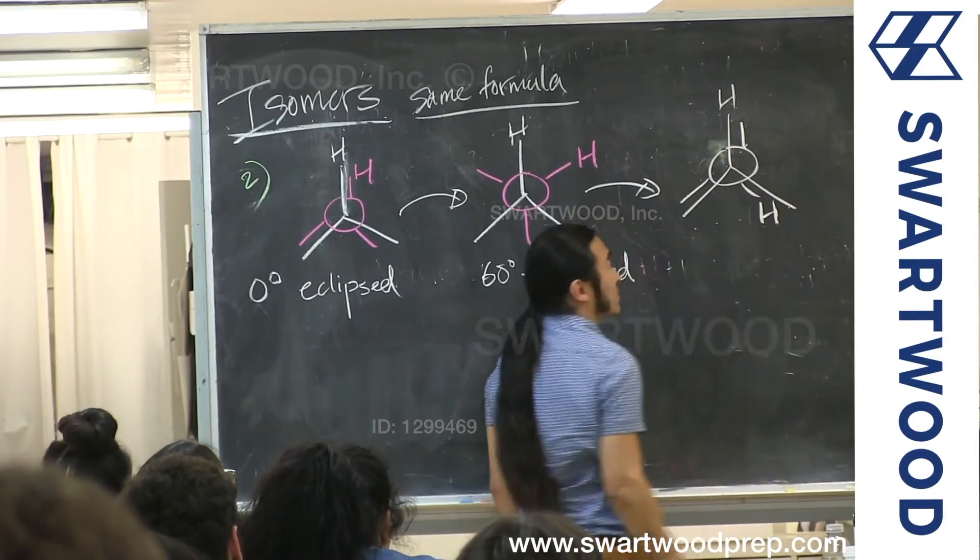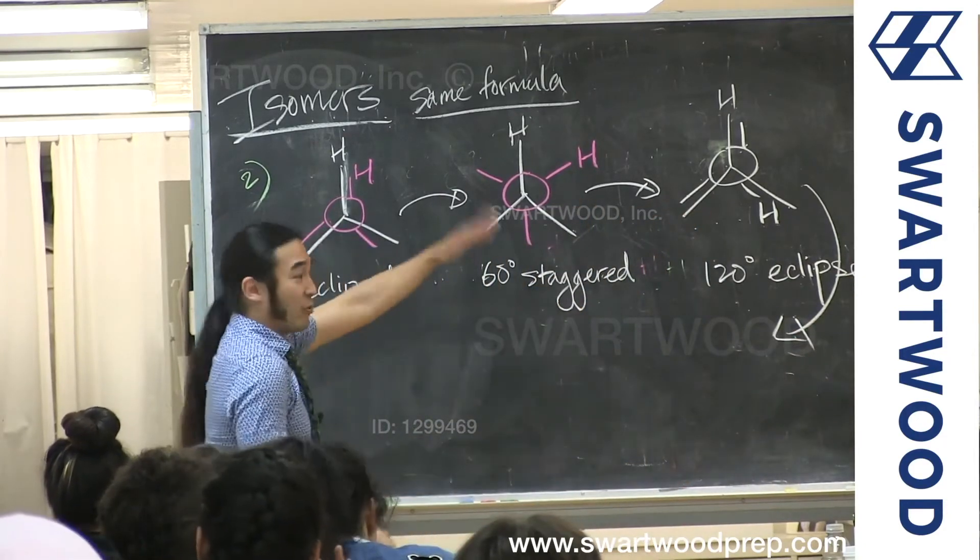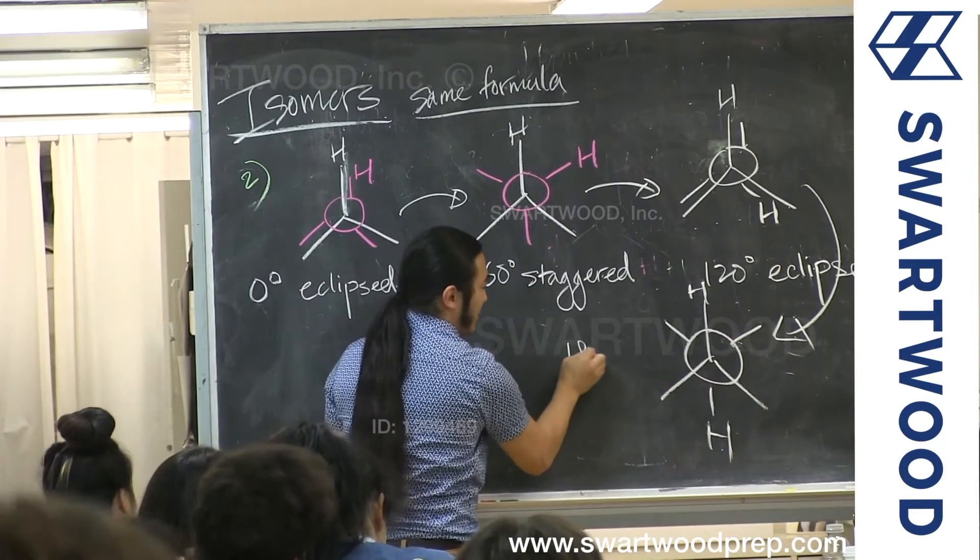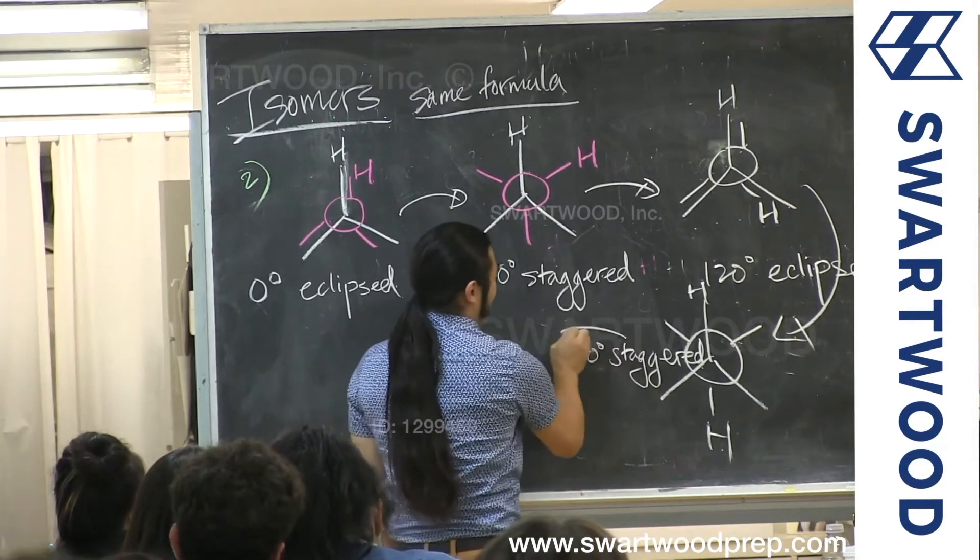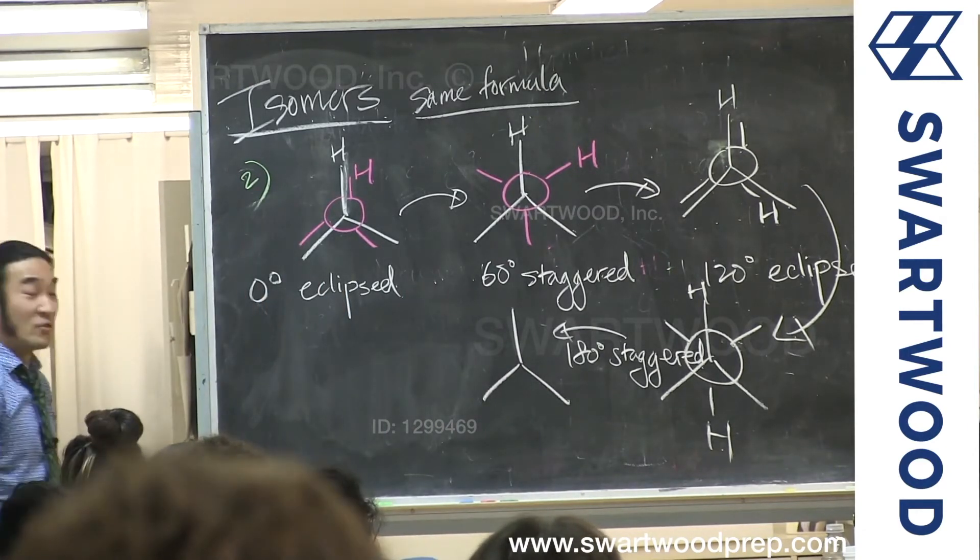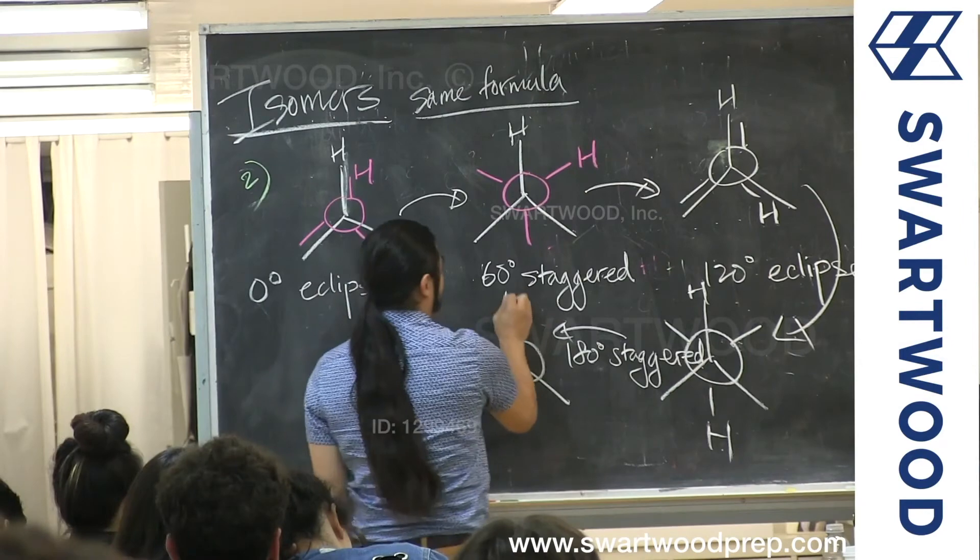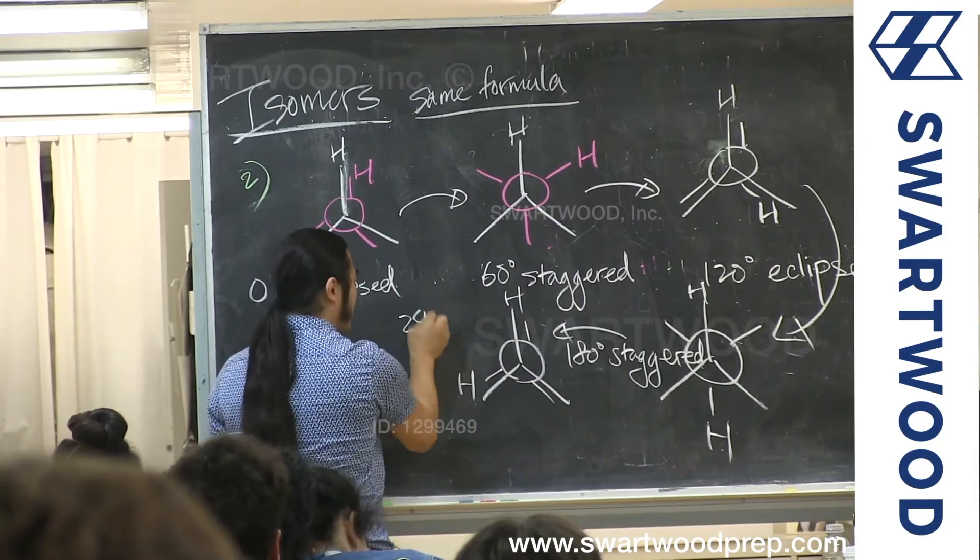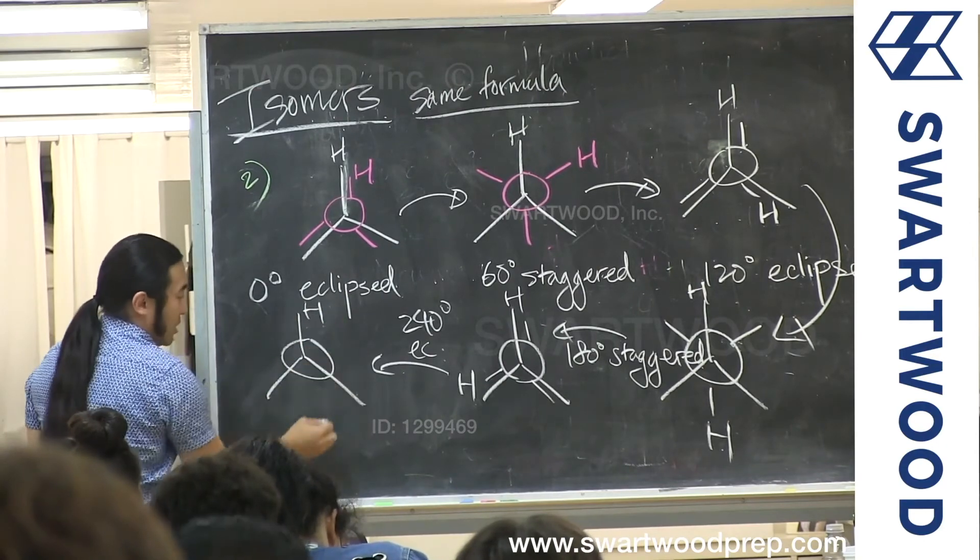You have the H up here. What would this be? This would be 120 degrees eclipsed. Let's keep going. Here's the H up here again. What would this be called? 180 degrees staggered? Nope, would not be anti. This is 240 degrees eclipsed. And then like this, what is this thing? This is all the way around. This is 300 degrees staggered and I go back over.